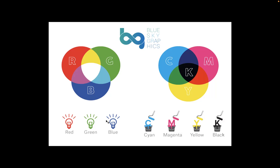CMYK is just a little bit different. CMYK stands for Cyan, Magenta, Yellow, and Key — which means Black. It should be used with anything that will be printed with ink. Anything that has the intention to be printed with ink should be in the color format of CMYK.